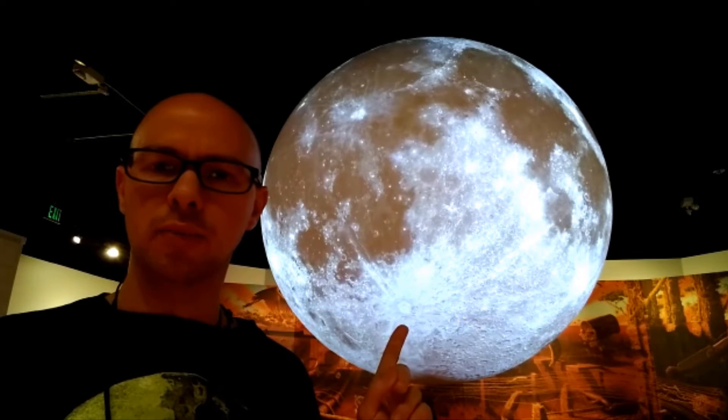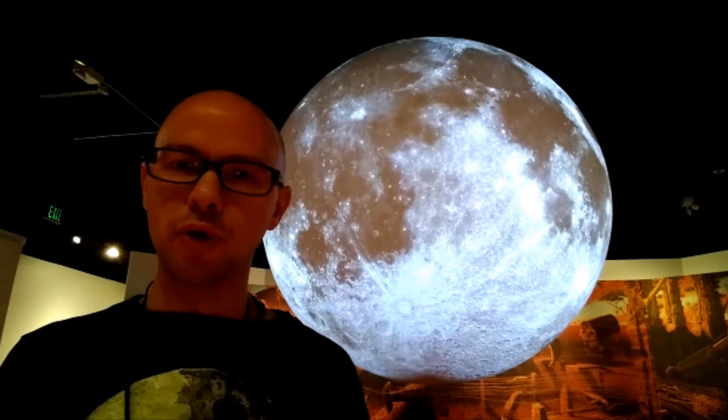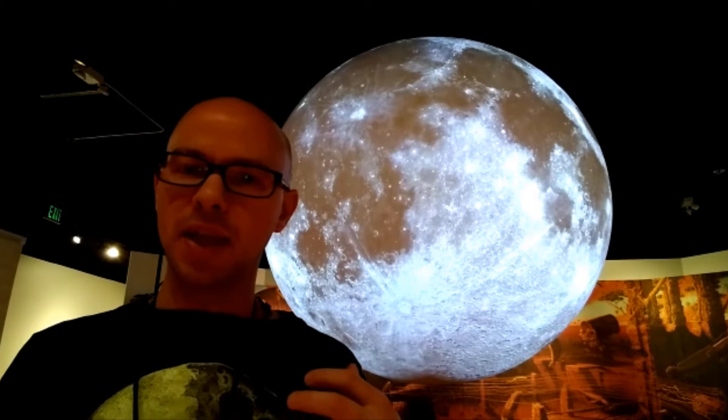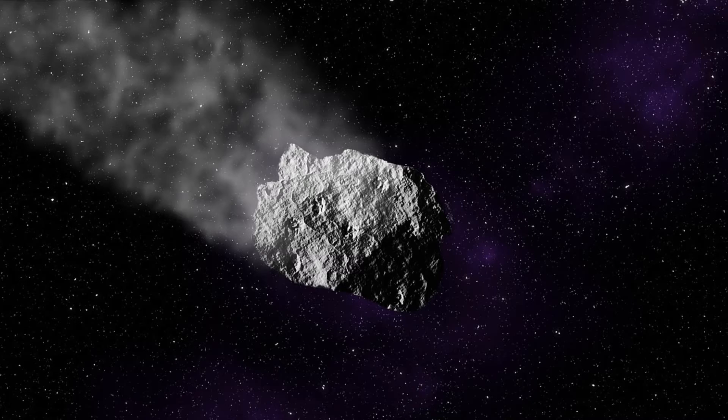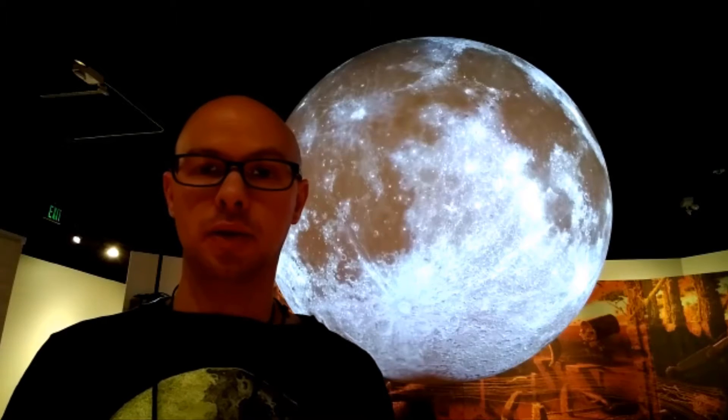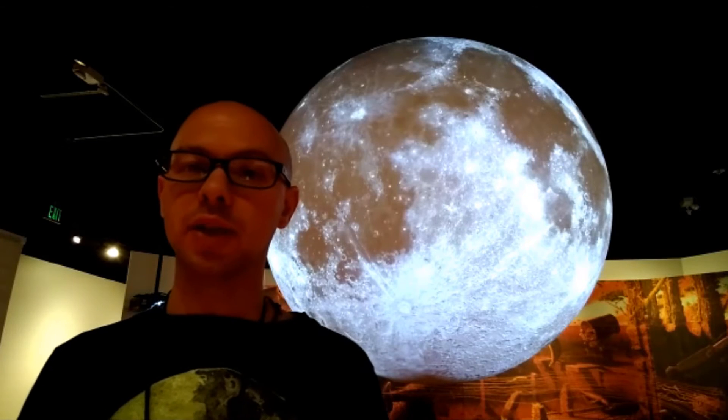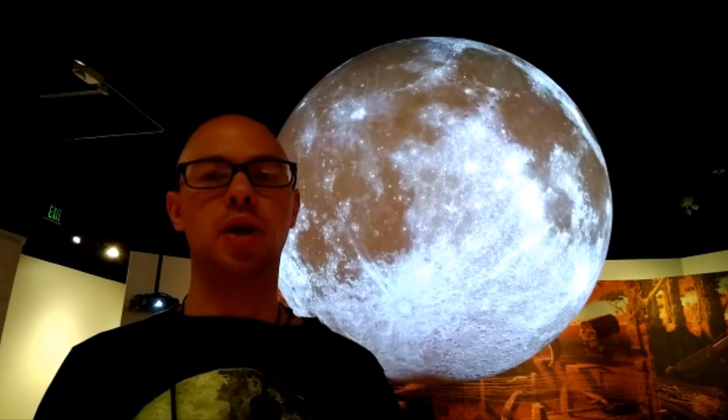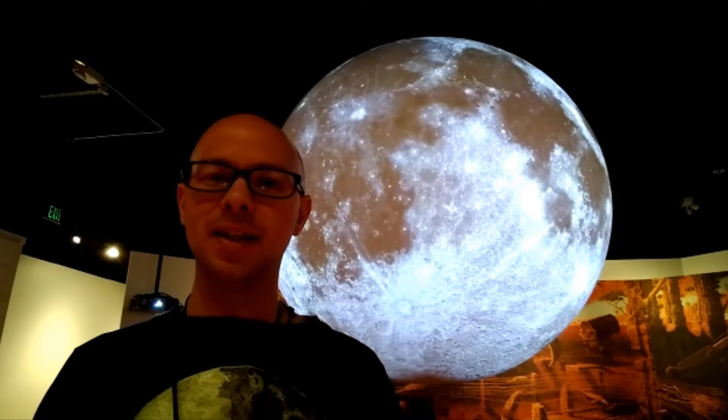These are craters. There's a very bright one right there. Craters are formed on the moon from the impact of asteroids and comets, which have been striking the surface of the moon for billions of years. The surface of the moon is relatively unchanged over that time other than the formation of these craters. This is very different from the Earth. On the Earth, we have erosion and mountain building and plate tectonics. So craters don't last all that long on the Earth.